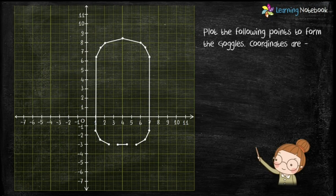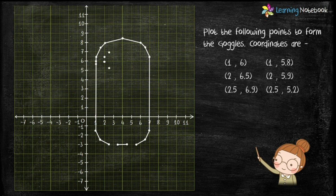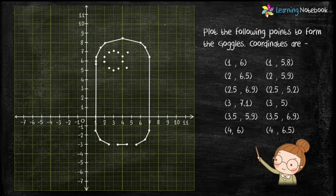Now plot the following points to form the goggles of the minion. All the points are in the first quadrant. These are the coordinates of the right eye of the goggles. Use these coordinates to create points for the left eye of the goggles. Now join these points to complete the goggles of the minion.